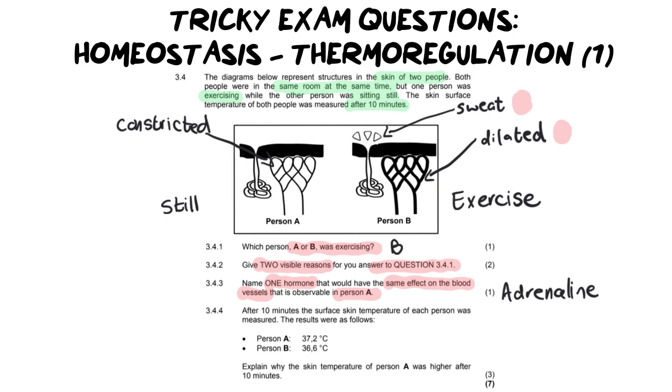So let's have a look at the question first. It says after 10 minutes the skin surface temperature of each person was measured and the results were as follows and this is the surface skin temperature. Person A was at 37.2 but person B was at 36.6.